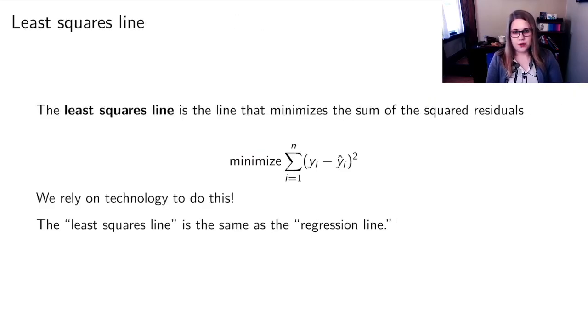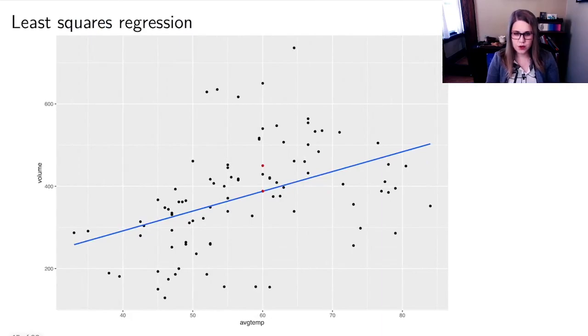And it turns out that the way that technology finds the line of best fit is that it minimizes the sum of the squared residuals. So here's the equation for that. You would take your observed real y minus your predicted y, you'd subtract them, you'd square them, you'd add them up, and you want to minimize that number. And we rely on technology to do that. So you don't need to know about this equation. But you should remember that the least squares line is the same as the regression line.